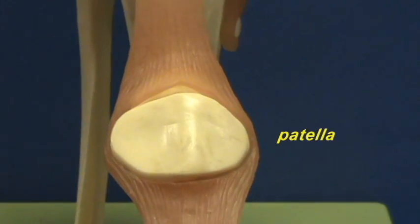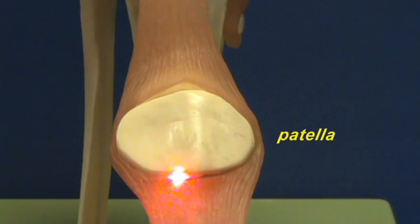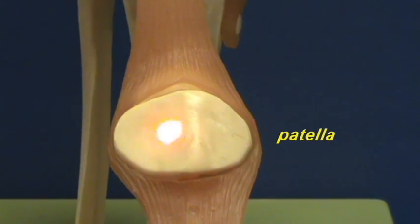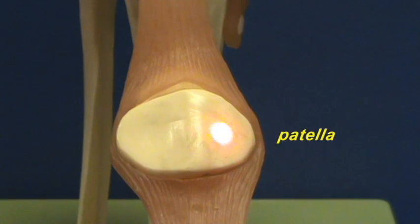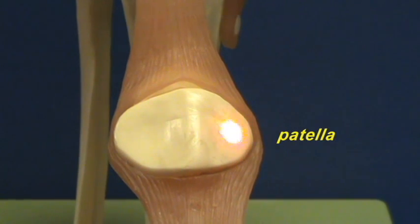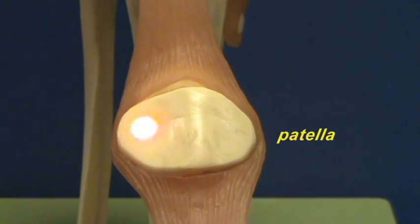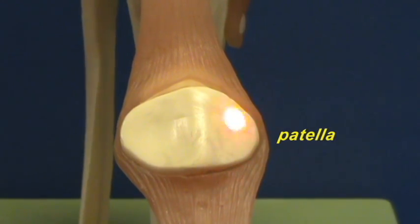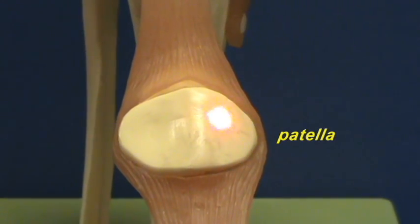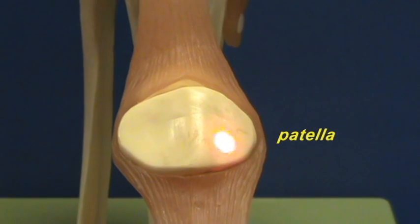The patella within the quadriceps femoris tendon. Here we can see the smooth articular surface — the inner surface of the patella. This would ride along the patellar surface on the lateral side. This is the facet which would ride along the medial side of the patellar surface.